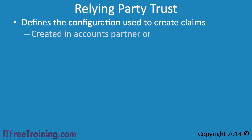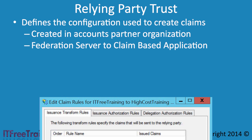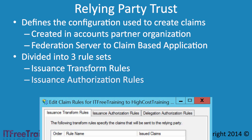A Relying Party Trust is used in the Accounts Partner Organization. In the previous example, ITFreeTraining would create a claim that could be used in HighCostTraining. A Relying Party Trust can also be created between the Federation Server and the Claim-Aware Application — I will have a look at how that one works in a moment. Once you configure a Relying Party Trust, it is divided into three sets of rules: issuance transform rules, issuance authorization rules, and delegation authorization rules.